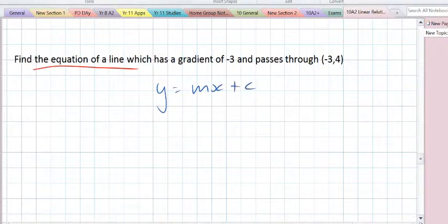We know that m is first, m is the slope or the gradient. Fortunately we're told this here. We're told that it is minus 3. So we can replace this with y equals minus 3x plus c.